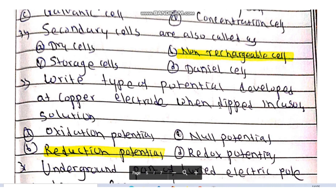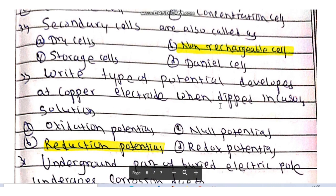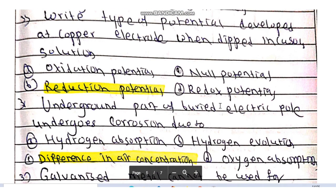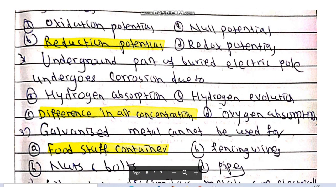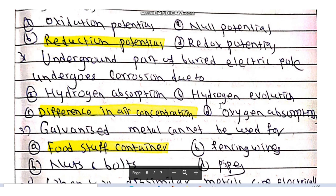Write the type of potential developed at copper electrode when dipped in copper sulfate solution. Reduction potential is developed at copper electrode. Underground part of buried electric pond undergoes corrosion due to differential difference in air concentration or you may say differential aeration.